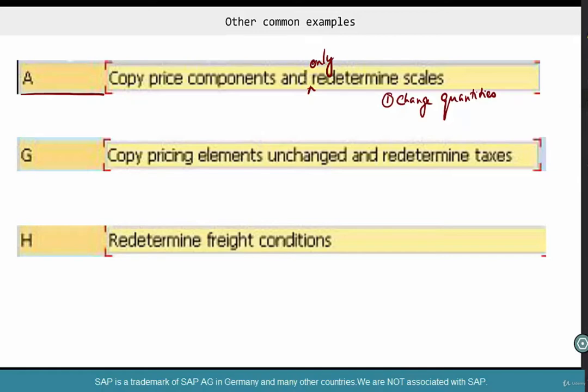It gets redetermined according to the fixed scale that we have created in the condition record. If the scale changes and you want to redetermine scales, basically either because of a change in quantity or otherwise, because change in quantity automatically triggers a change in scale, meaning it goes and looks at the scale. But it only goes and looks at the scale at the transactional level, not at the actual condition record level. If you want SAP to go look at the condition record again, see if any scales have been changed, you can use condition type A.